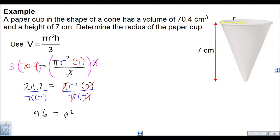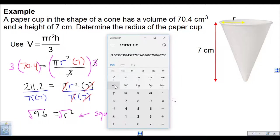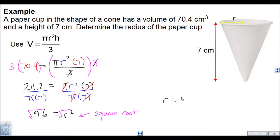Now here is r squared, but I just want r, the radius. So the last step is to take the square root. We square root both sides: r is equal to the square root of 9.6, which is 3.099 — let's round that to 3.1. So 3.1 centimeters.